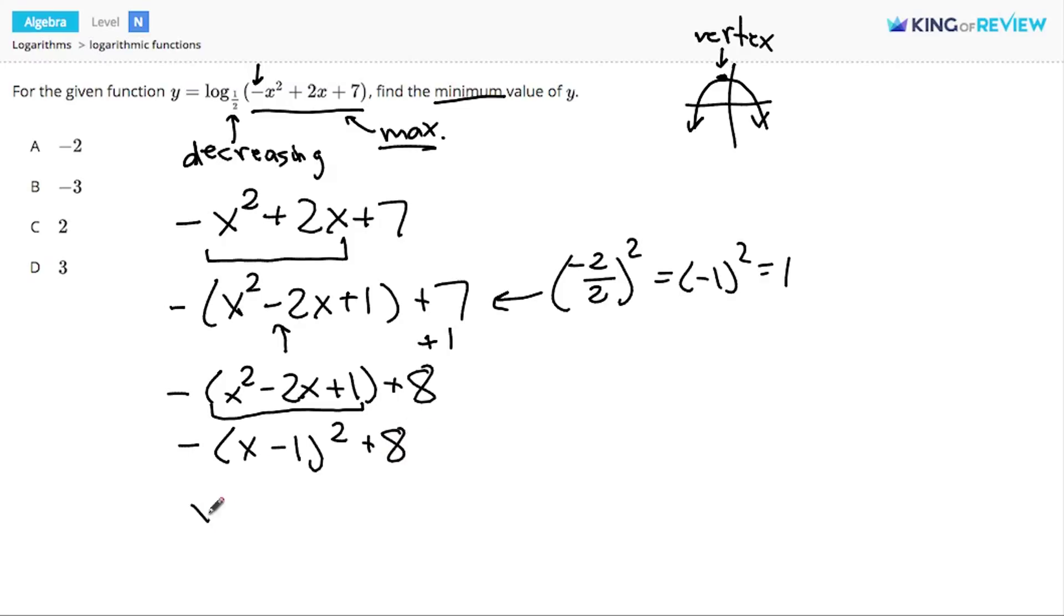The vertex of the parabola, according to this equation, is the number inside the parentheses, negative 1, except it's the opposite sign of what's in the parentheses, so it would actually be a positive 1, and then the number outside the parentheses, 8.